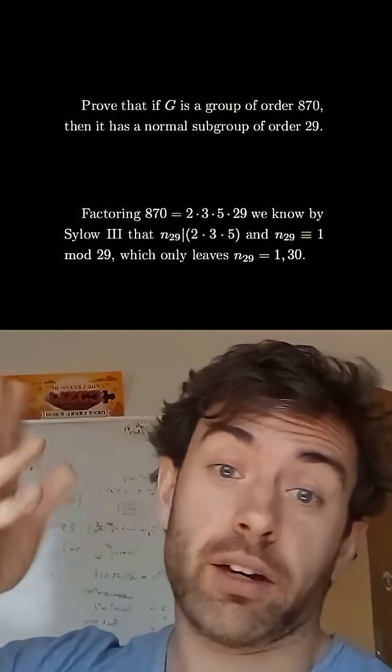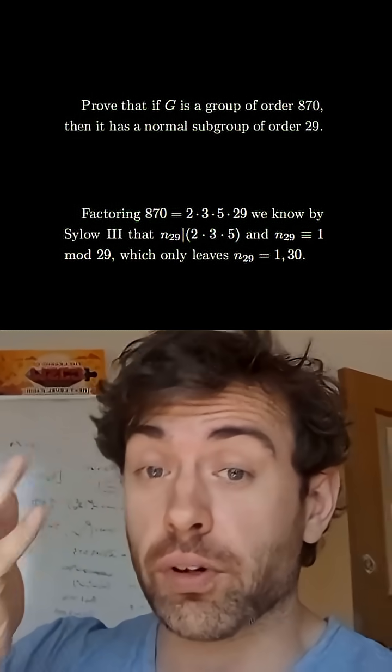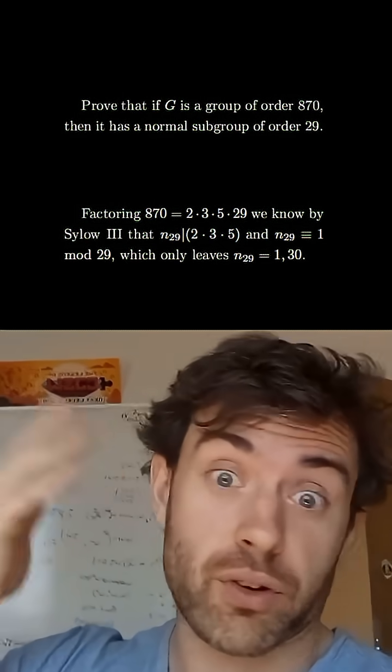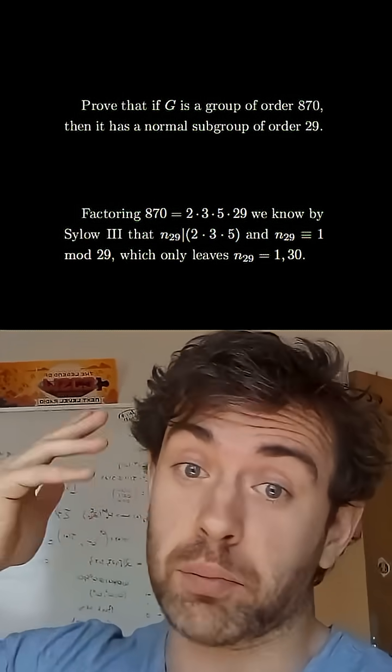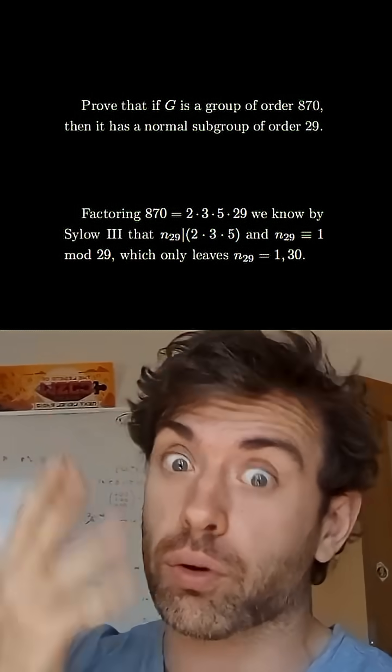We start by factoring 870 into its prime factors, and using Sylow III we know that the number of Sylow subgroups has to divide 2 times 3 times 5 and be congruent to 1 mod 29, so the only possibilities are that it's either 1 or 30.